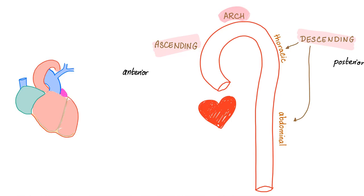The descending aorta — same aorta — has different sections. We call it the thoracic aorta when it's in the thorax, and then it leaves the thorax going to the abdomen through the diaphragm, and in the abdomen it's called the abdominal aorta.